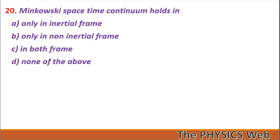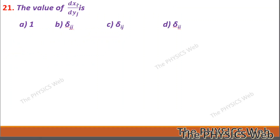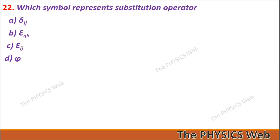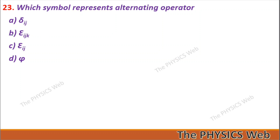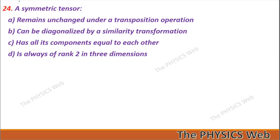Question 20: Minkowski space-time continuum holds in both inertial and non-inertial frames — so C is your correct option. Question 21: The value of dx_i/dy_j equals δ_ij — so C is your correct option. Question 22: The symbol that represents the substitution operator is the Kronecker delta — so A is your correct option.